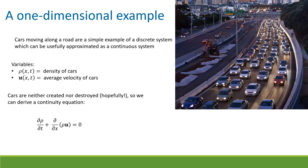The density of cars can vary over the length of the highway, and we also have the average velocity of cars at a given point. A really high density and really low average velocity at a point would correspond to a traffic jam. The system tells us how traffic is flowing on any given highway.